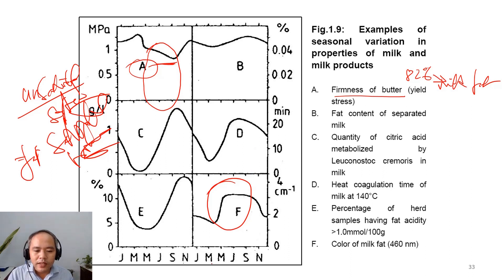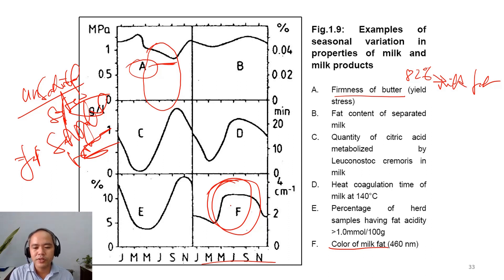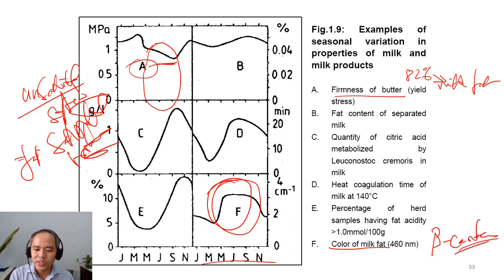Looking at the effects of season on the color of milk fat: in the summer, cows eat more fresh grass which contains more beta-carotene, giving it more yellow color. Beta-carotene is the component responsible for the yellow or orange color of milk fat, and in the summer cows can absorb more of it from fresh grass.